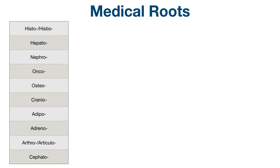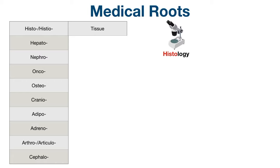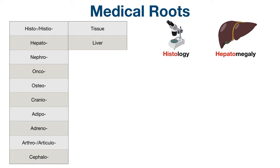Let's move on to the next group of common roots. First, we have histo or histio, which means tissue. For example, histology is the study of the microscopic structures of tissues. Next is hepato, which refers to the liver. For example, hepatomegaly is the abnormal enlargement of the liver.